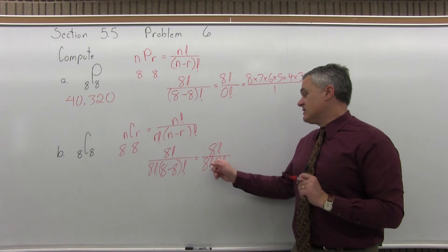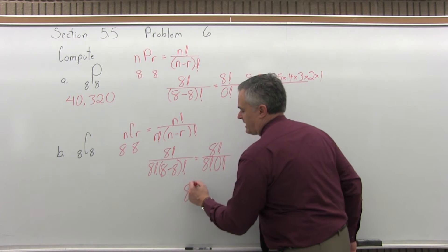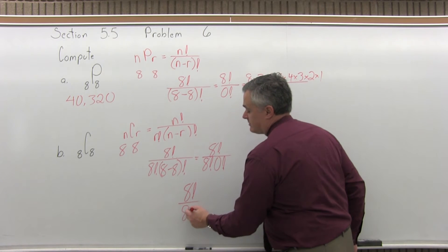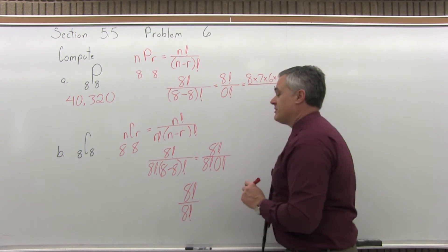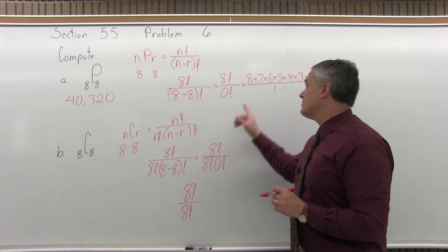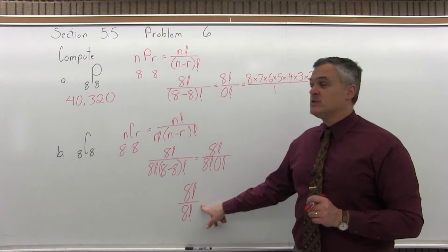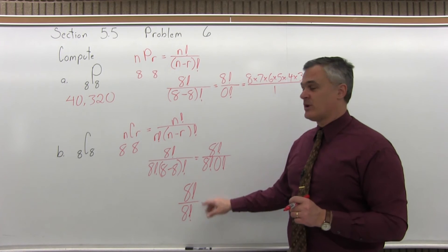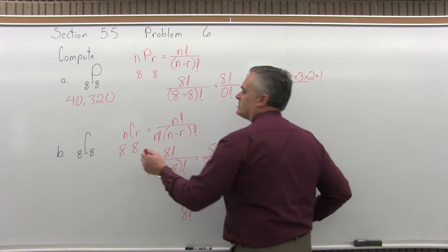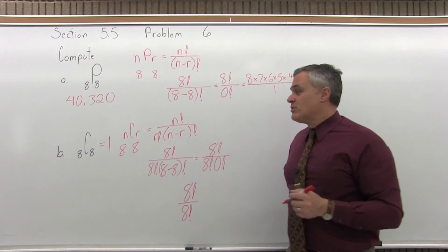Remember, 0 factorial is defined to be 1. So, I can have 8 factorial in the top over 8 factorial times 1 in the denominator. So it winds up being 8 factorial over 8 factorial, which you could multiply out and reduce, but I know it's going to reduce to 1. It's 40,320 over 40,320. It's the same value over itself. It must reduce to 1.